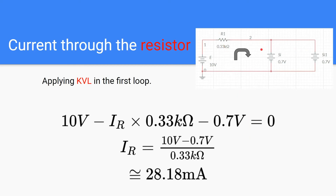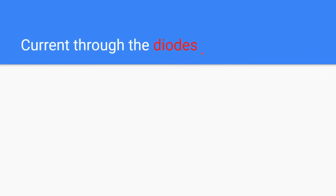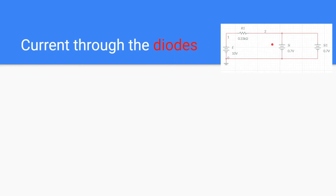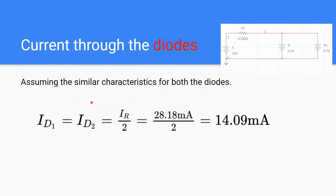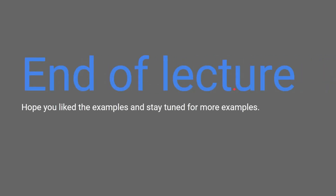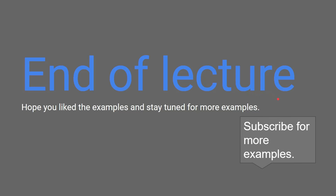Now we will find the current through the diodes. Both diodes are silicon, so they have similar characteristics, meaning the current through both diodes will be the same. The current coming in is divided equally at the junction, so I_D1 equals I_D2 equals I_R divided by 2, which is 28.18 mA divided by 2, giving 14.09 milliamperes through each diode. Hope you liked the example — stay tuned and subscribe for more examples.